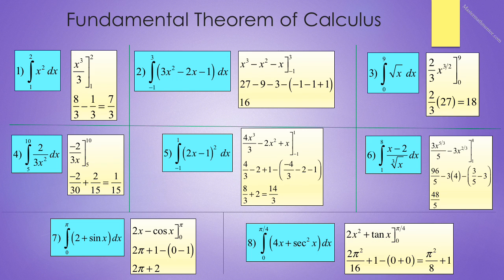Number 8 reads the integral from 0 to pi over 4 of 4x plus secant squared of x dx. Integrating each piece we get 2x squared plus tangent of x evaluated from 0 to pi over 4. And that gives 2 pi squared over 16 plus the tangent of pi over 4, which is 1, minus the quantity 0 plus 0, getting pi squared over 8 plus 1.